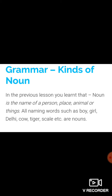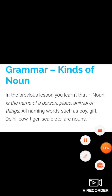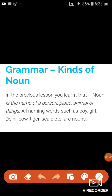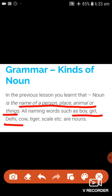All naming words such as boy, girl, Delhi, cow, tiger, scale, etc. are nouns. A noun is the name of a person, place, animal, or things. Examples: all naming words such as boy, girl, Delhi, cow, tiger, scale, etc. are nouns. Clear?